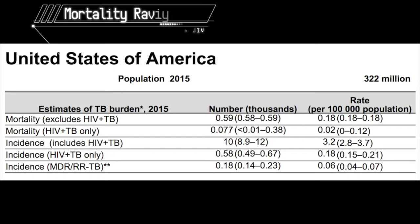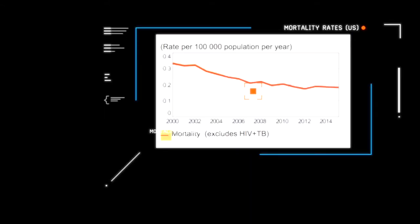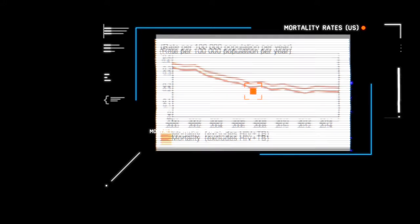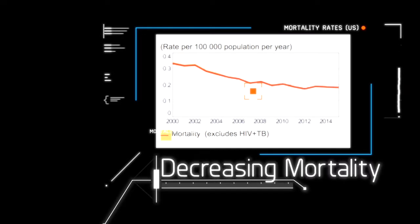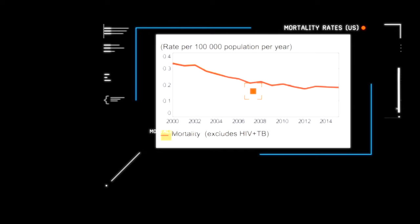You just saw the gender rates — about a 52% rate for men versus women. This table shows mortality rates, and as you can see, there's a mortality of 0.59 per thousand, so roughly 590 people died of tuberculosis about two years ago. The trending graph for mortality shows that since around 2015, there has been a decreasing amount of tuberculosis mortality rates — roughly 500 to 600 people have died.